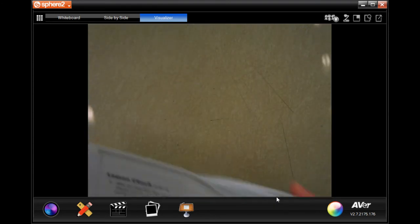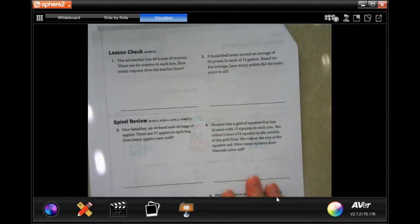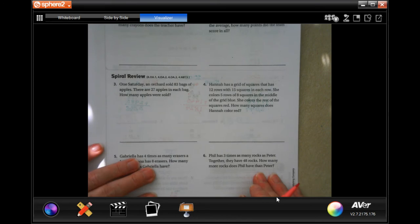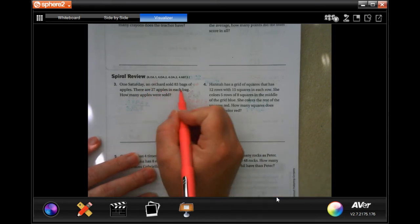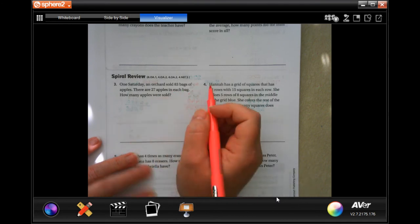Let me go into the back, and you are going to go ahead and take care of the lesson check. 1 and 2, you can totally do those. We are going to go ahead and take care of 3 on our review. It says, one Saturday, an orchard sold 83 bags of apples. There's 27 apples in each bag. How many apples were sold?